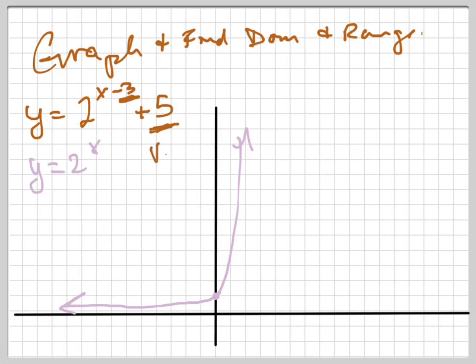So this is your vertical shift, and it shifts it up 5. So instead of the horizontal asymptote being down here at 0, it's going to be at 5. There's your horizontal asymptote, it shifts it up.